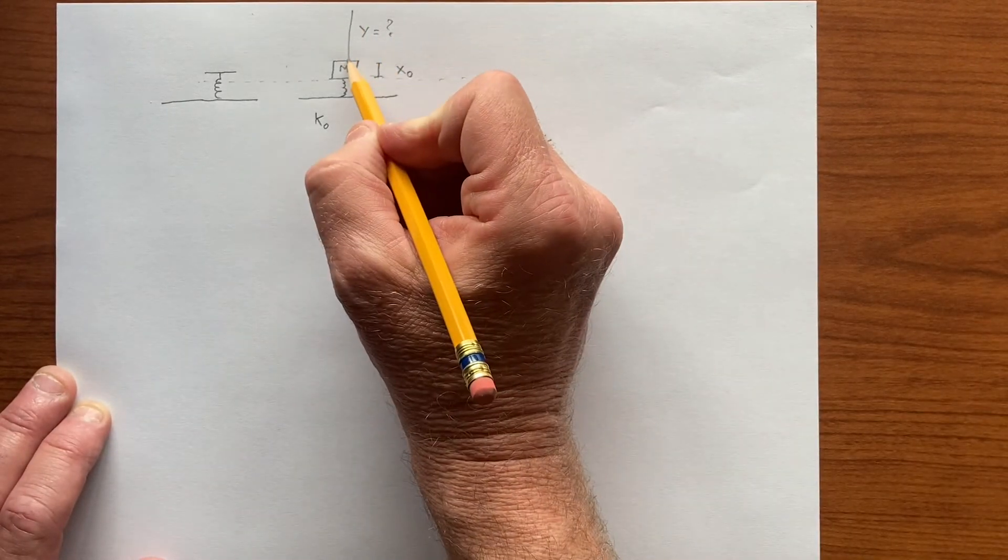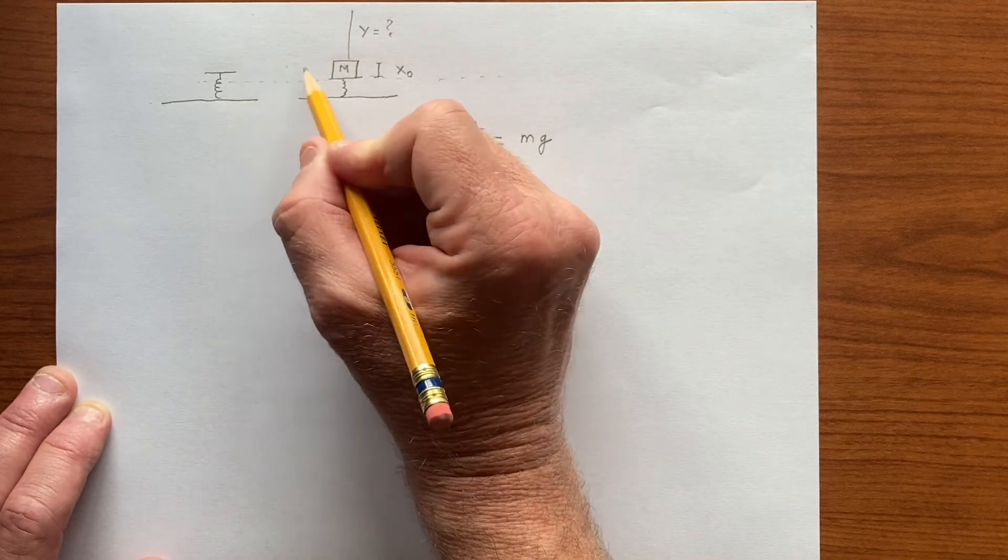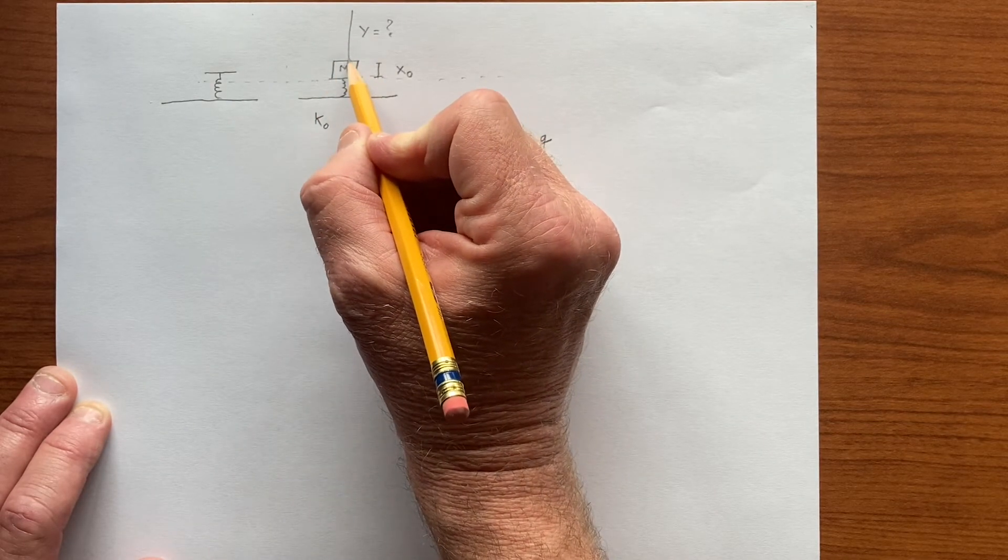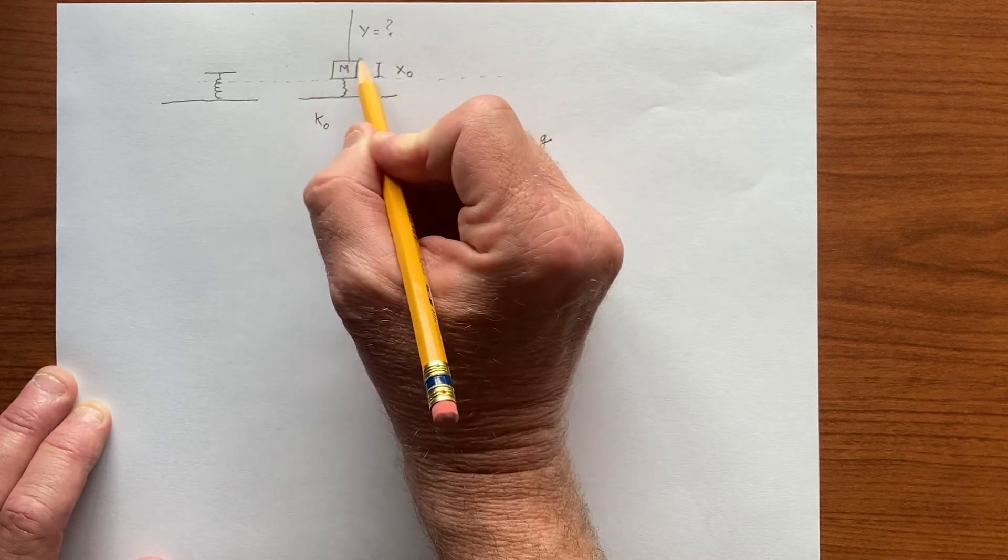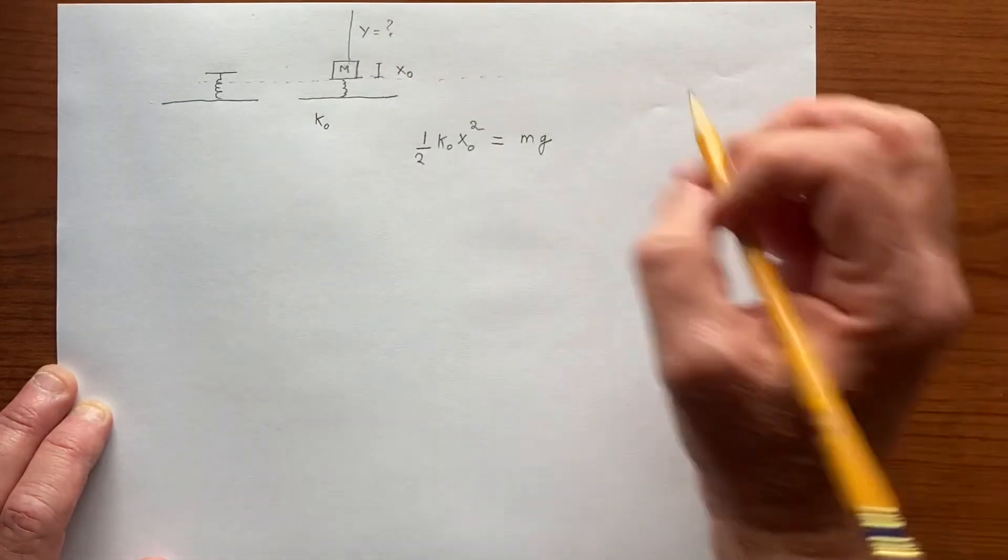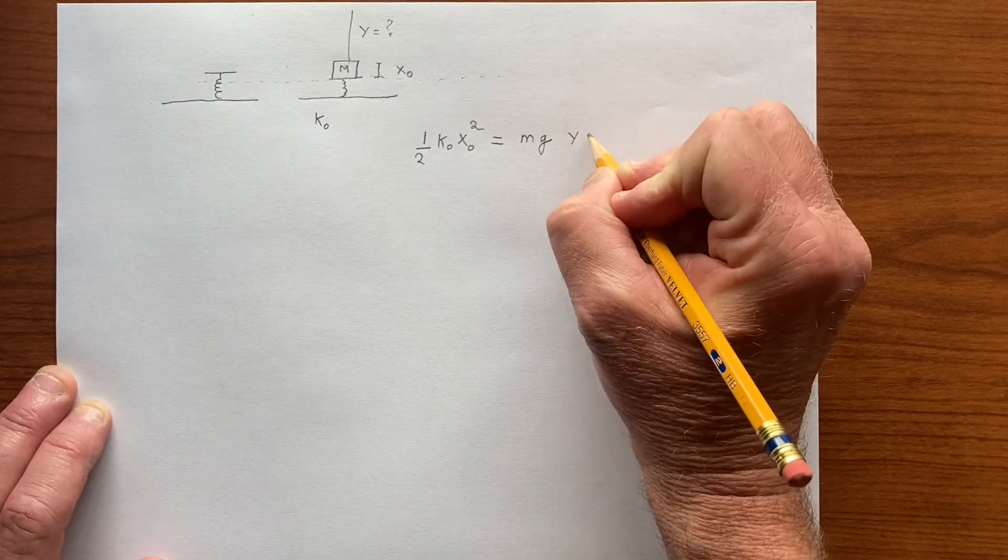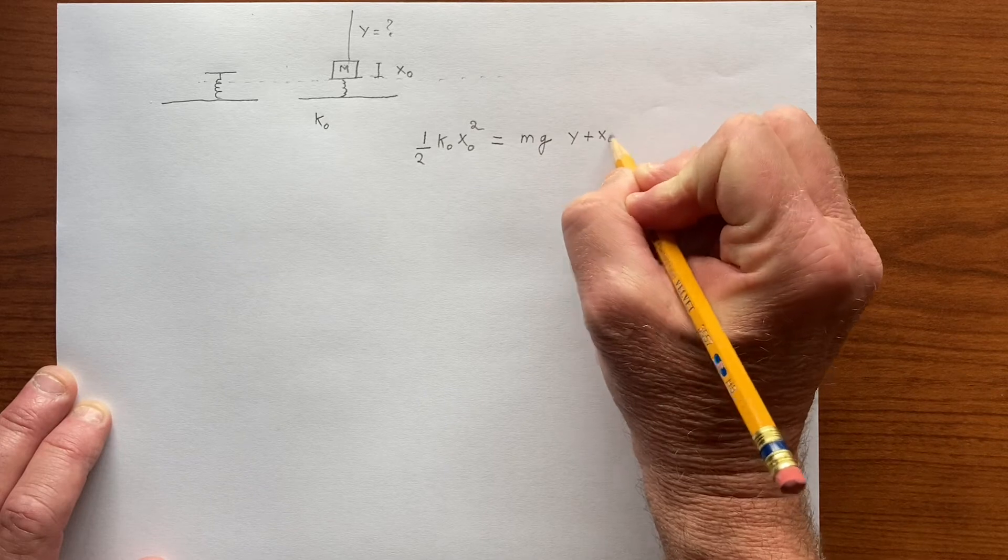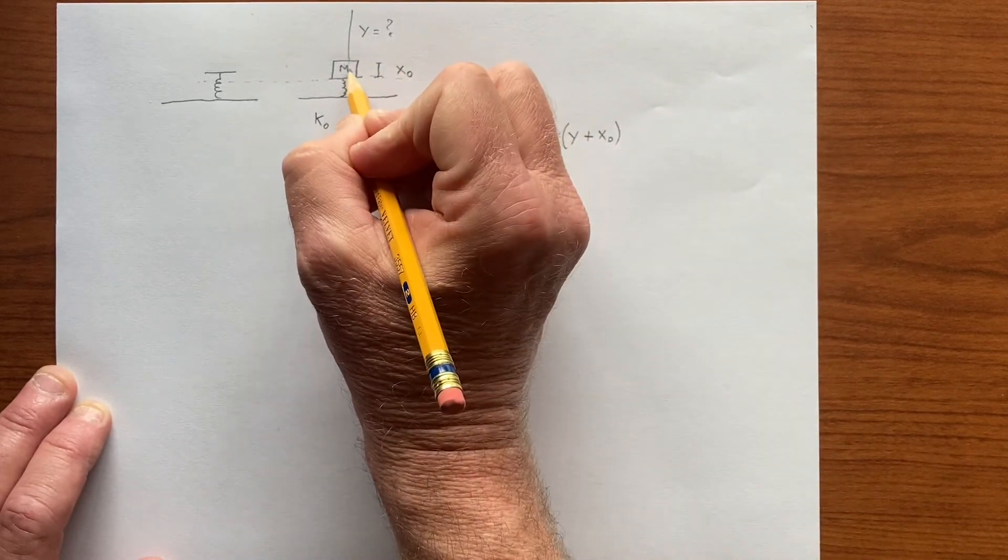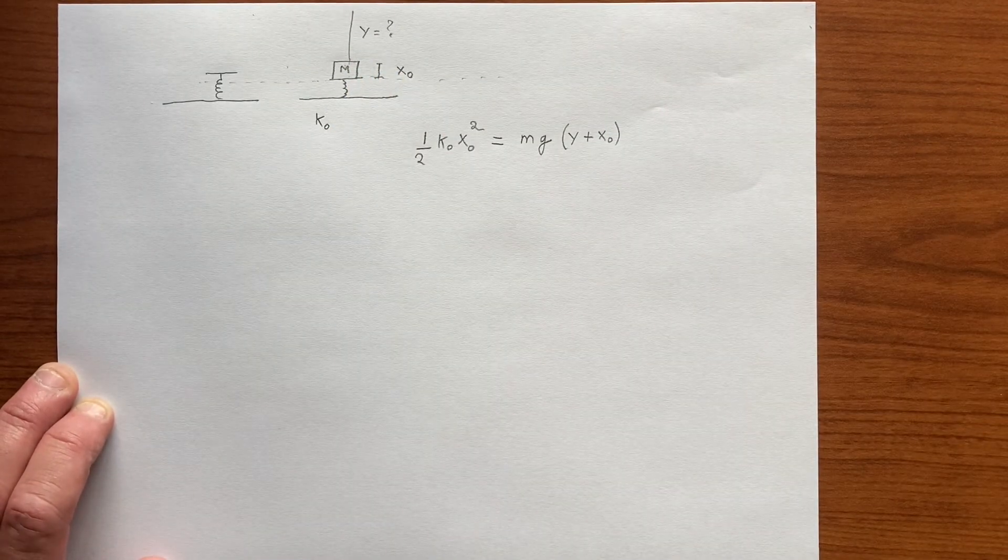The additional y is the distance the object travels from where the spring is uncompressed. The total height is that distance plus x0 because the object travels upwards the distance x0.